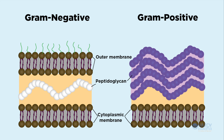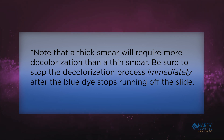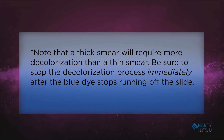In contrast, the effect of decolorizer on gram-positive bacteria is dehydration. This decreases the cell wall permeability, causing gram-positive cells to retain the crystal violet–Gram's iodine complex. Note that a thick smear will require more decolorization than a thin smear. Be sure to stop the decolorization process immediately after the blue dye stops running off the slide.